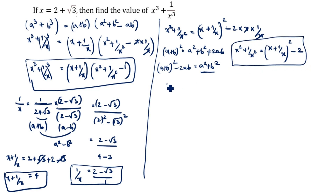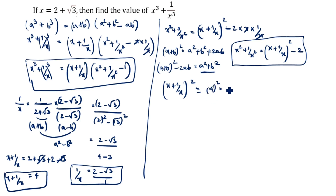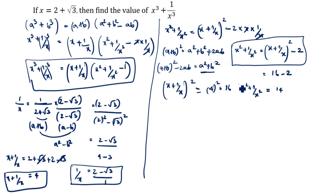Now we find x plus 1 by x whole square. We already know x plus 1 by x is 4. So 4 square is 16. Therefore x square plus 1 by x square equals 16 minus 2, which equals 14.